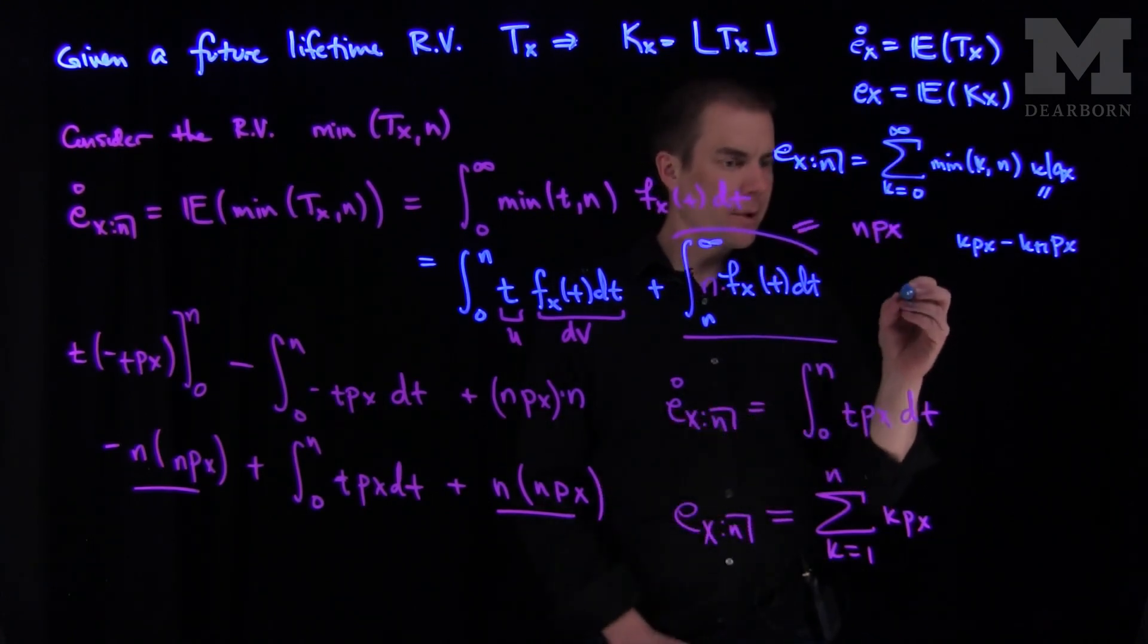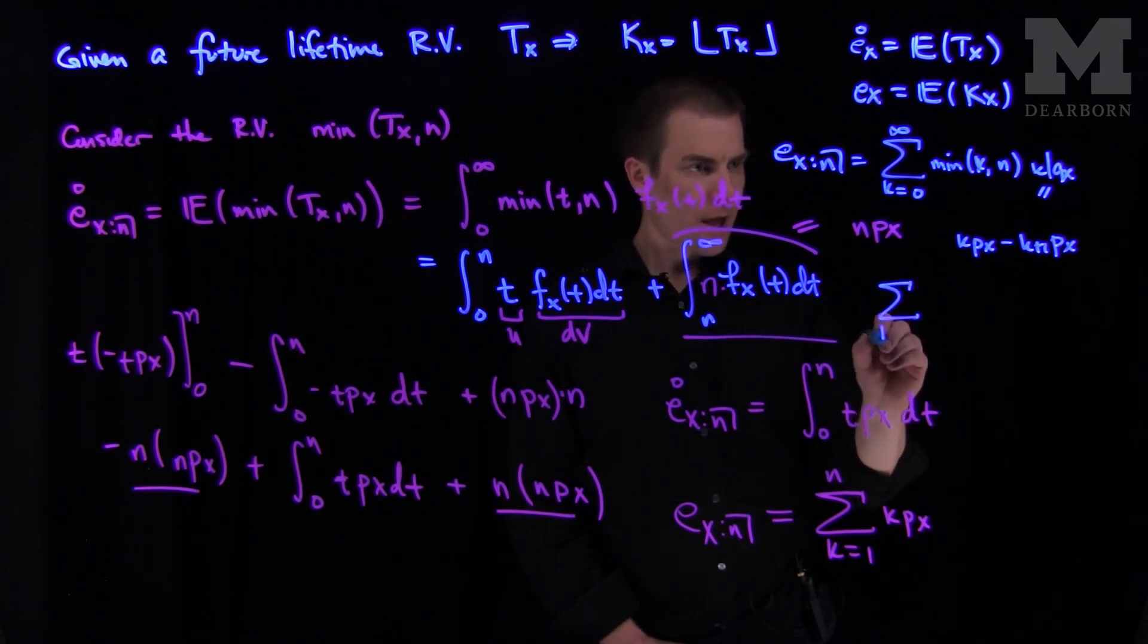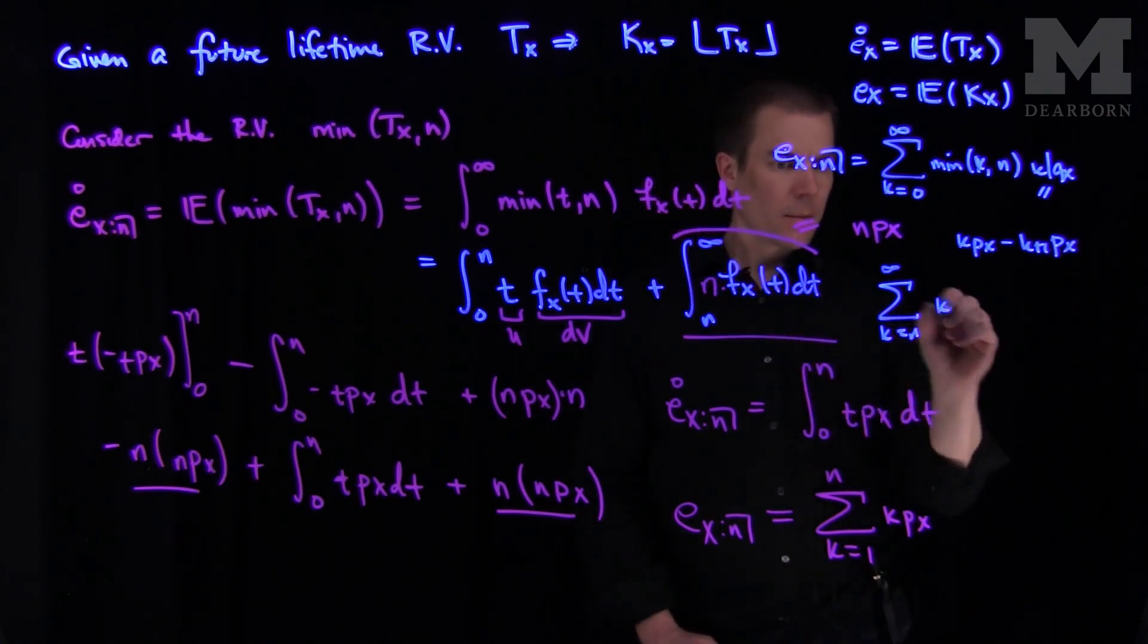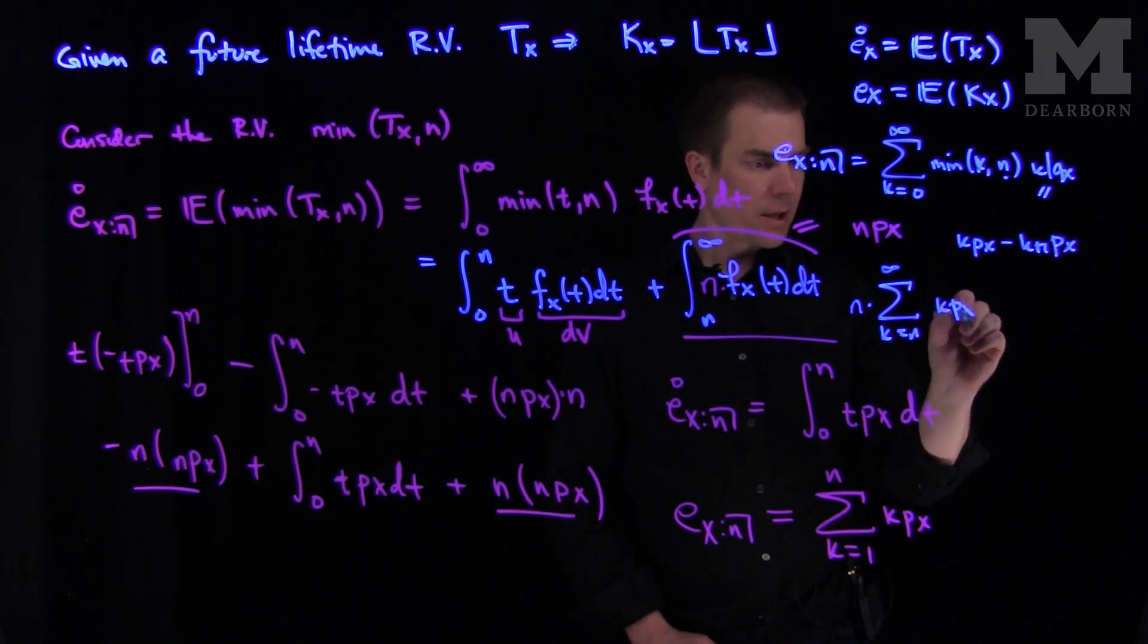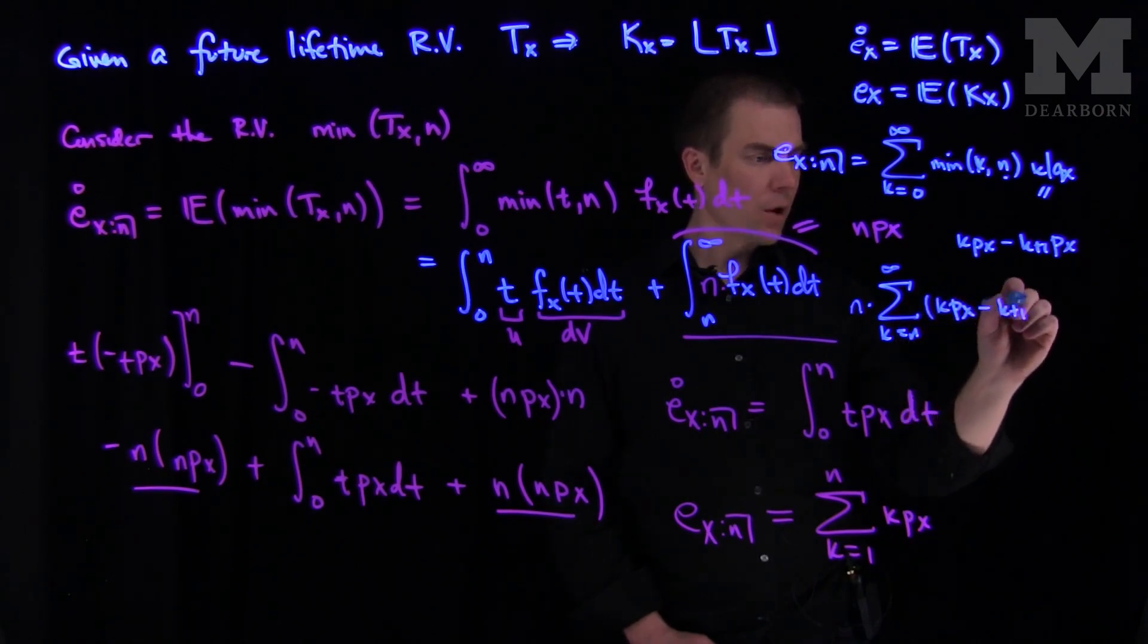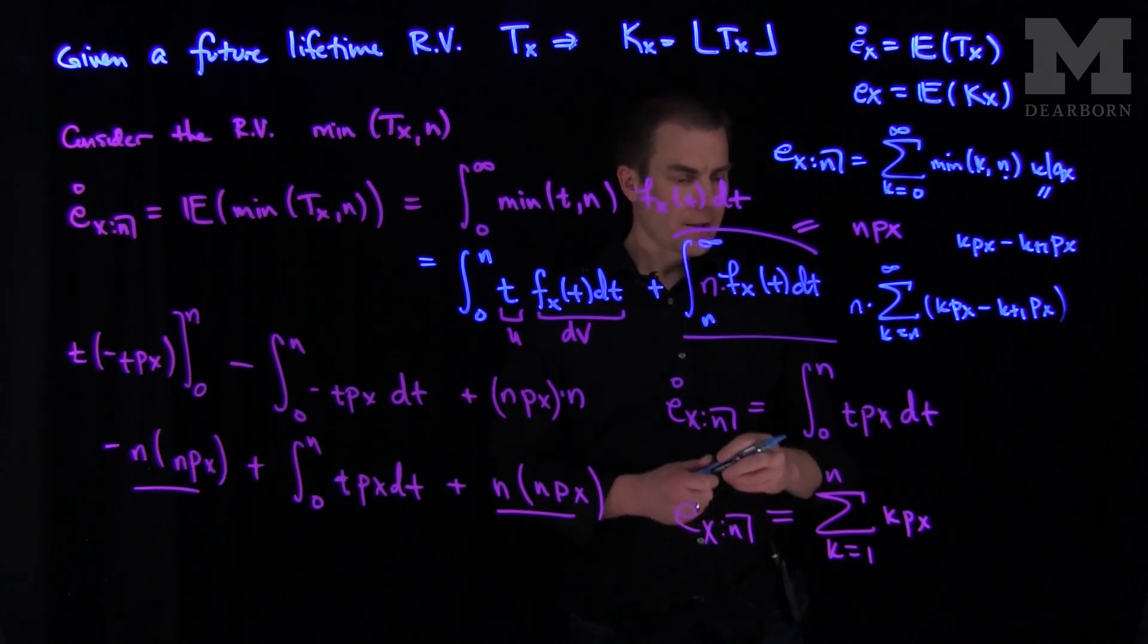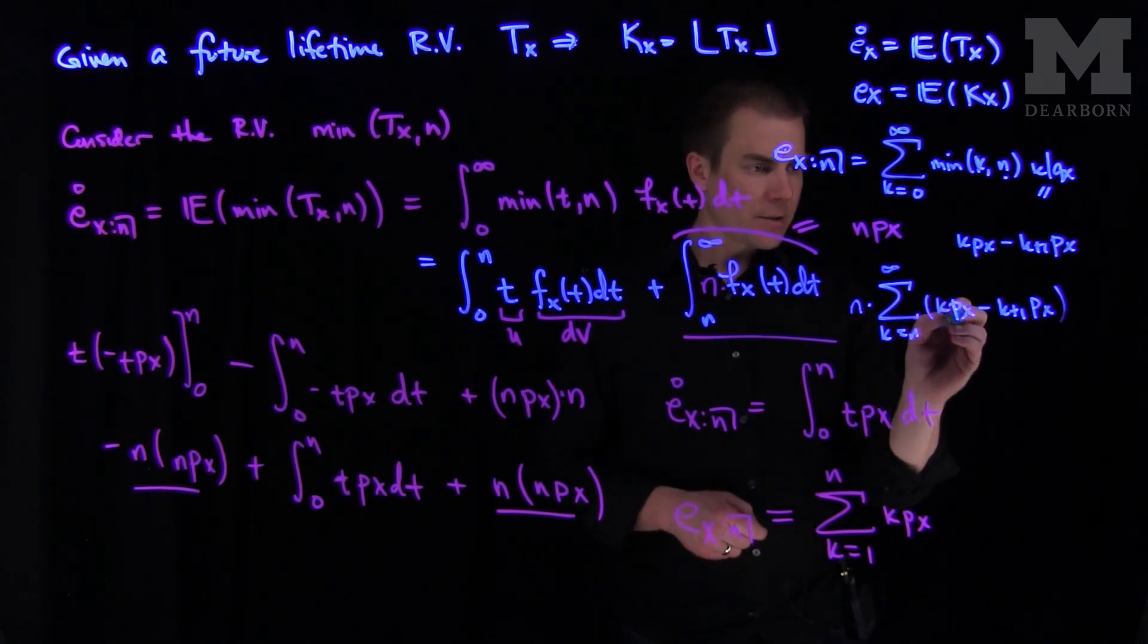And so what will happen is those terms when you get past the level of n, you'll have the sum k goes from n to infinity. And then I'll have a k minus n. Pull that n out because of the minimum over there. k px minus k plus one px. And this is a telescopic sum over here.